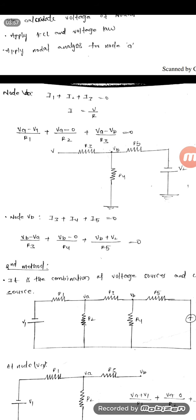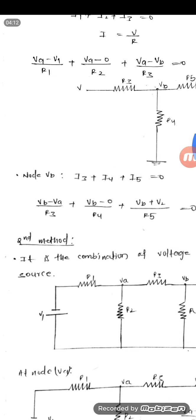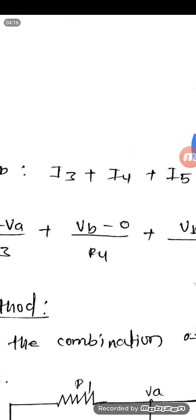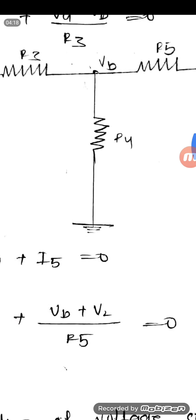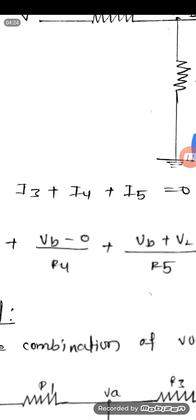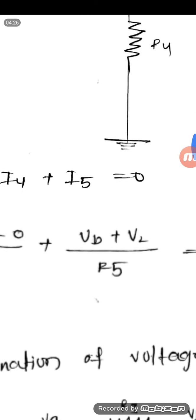What is I3? It is the potential difference between VB and VA by R3 — that is (VB − VA) / R3. What is I4? The potential difference is VB minus 0 by R4, that is VB / R4.